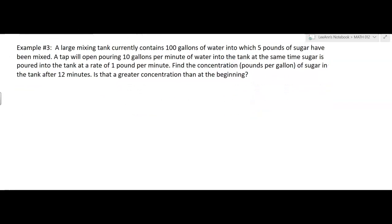A large mixing tank currently contains 100 gallons of water into which five pounds of sugar have been mixed. So that's the starting point — we're starting with 100 gallons of water and five pounds of sugar. Remember that, we'll come back to it.